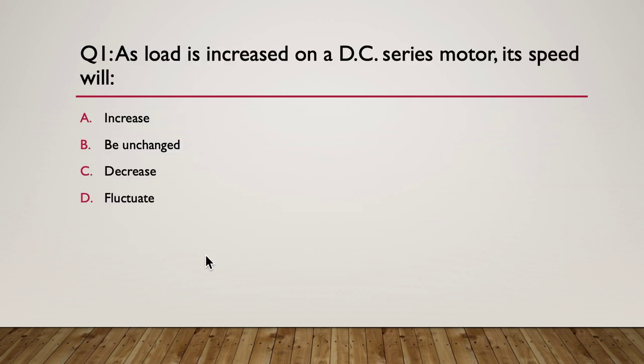So here's the first one. Question one: as the load is increased on a DC series motor, its speed will do what? A: increase. B: unchanged, decrease. C: fluctuate, change all over the shop. Pause here.